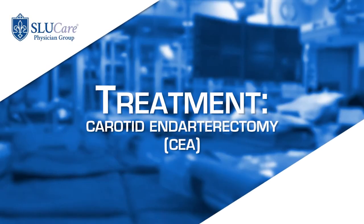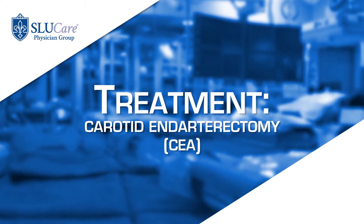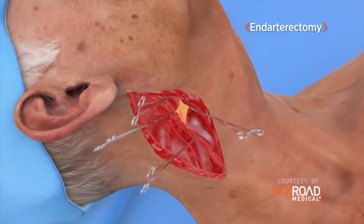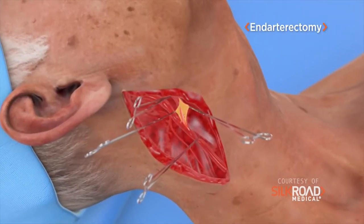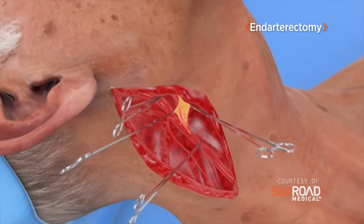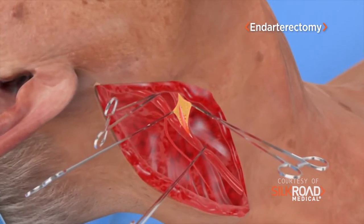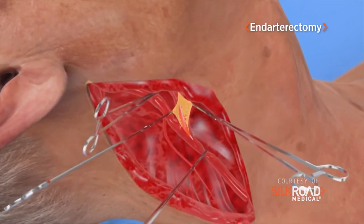Carotid endarterectomy is a surgery that we do for carotid artery disease. In this procedure we make an incision along the neck, identify the artery, get control both proximally and distally in the neck, and then we open up the artery and clean out the disease from the diseased arteries. We then usually close the artery with a patch — some material to keep the artery from narrowing.